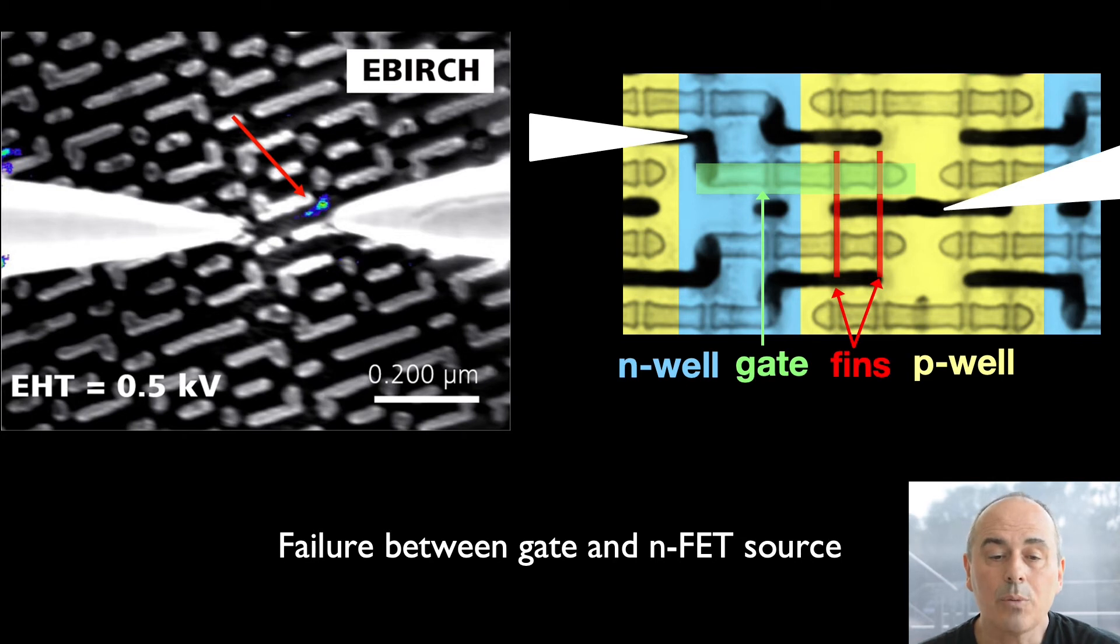On the left hand side, we see the EBIRCH image taken to verify the defect and visualize its location. The best result was obtained at a beam voltage of 500 V. We actually observed two spots, the brightest one close to the second fin as can be deduced by comparing the right image.